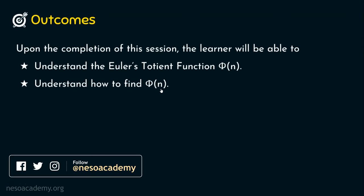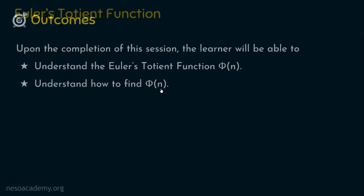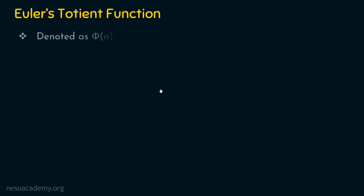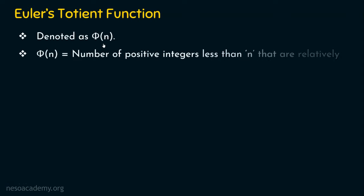Let's dive into the topic of the day: Euler's totient function. Euler's totient function is denoted as phi of n. Phi of n is the number of positive integers that are lesser than n and are relatively prime to n. This concept will be clear when we see some examples.